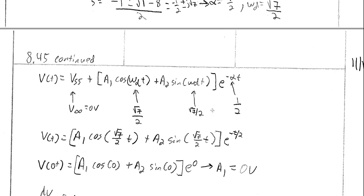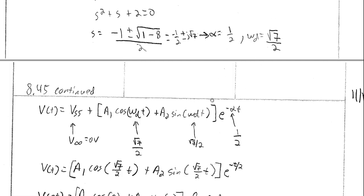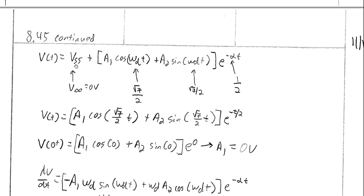The general form for an underdamped circuit is V(t) equals V_SS plus [A₁·cos(ω_D·t) plus A₂·sin(ω_D·t)]·e^(−α·t), where V_SS comes from V(∞) which we found is zero volts, ω_D is √7/2, and α is one-half. Plugging these in gives the general form solution for V(t); the only remaining unknowns are A₁ and A₂.